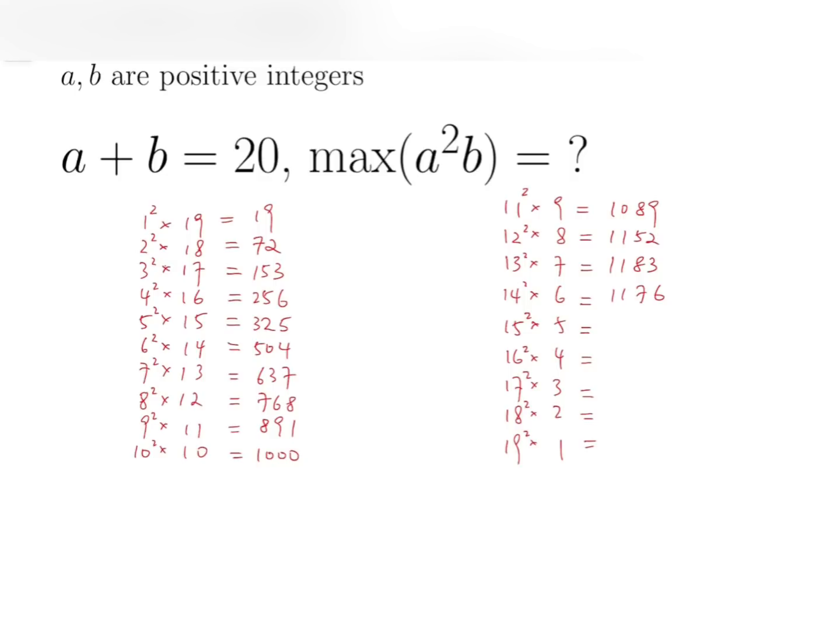The products afterwards are 1125, then 1024, 867, 648, and 361, respectively. So that means this is the maximum value when a and b are positive integers, and this is the answer.